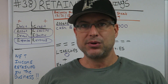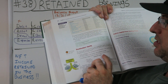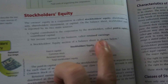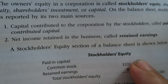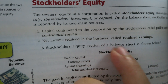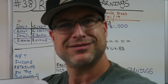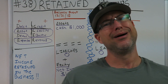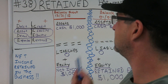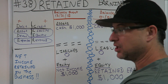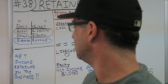I opened my book and looked at the definition of retained earnings. The book says: net income retained in the business — that's retained earnings. For real though, that's the definition straight from the book.